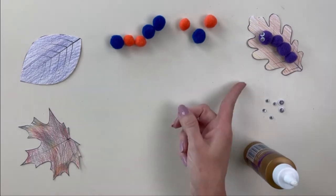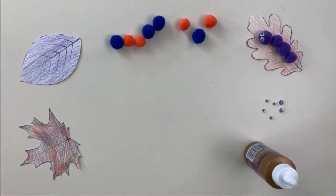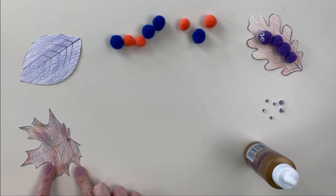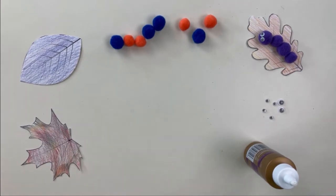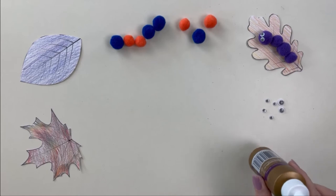So for our caterpillar craft today, you're going to need some leaves, and you can either use a printable or you can use construction paper or you can design your own leaf. You're going to need your pom-poms. You're going to need some wiggly eyes, and you're going to need some glue.